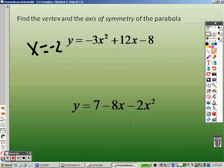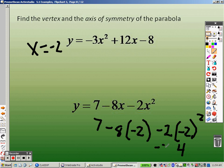So to find y, I just need to plug that in. So this is 7 minus 8 times negative 2 minus 2 times negative 2 squared. Well, this is a 4. It's a negative 2. Negative 8 times negative 2 is positive 16, and that's a 7.